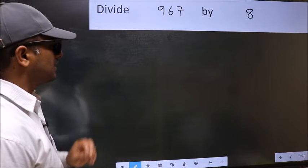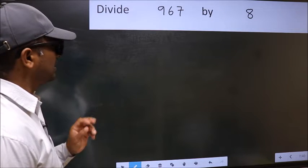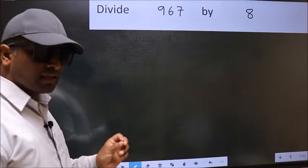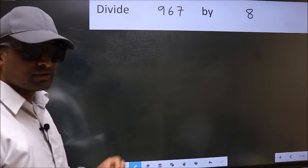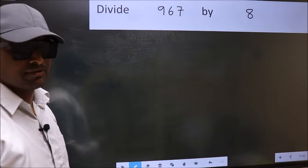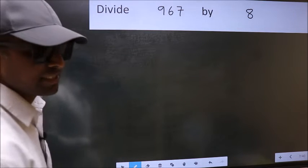Divide 967 by 8. While doing this division, many do this mistake. What is the mistake that they do? I will let you know. But before that, we should frame it in this way.